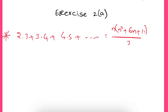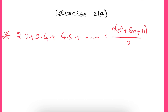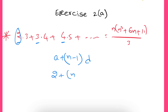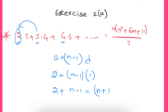In the given question, the nth term is not mentioned, so we first need to find it. We will use the nth term of the AP, that is a + (n−1)d. If you observe the first numbers 2, 3, 4, 5 and so on, the first term a is 2, and the common difference d is 3−2 = 1. So the nth term is 2 + (n−1)×1 = n+1.